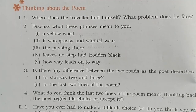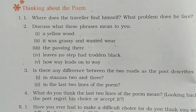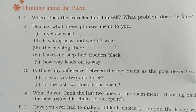The second part of question 1: Discuss what these phrases mean to you. First, 'a yellow wood' — a yellow wood means a wood in autumn; its leaves had turned yellow. Second, 'it was grassy and wanted wear' means the path was covered with grass; obviously, few people had walked on it, so the grass was not worn out. Third, 'the passing there' means walking on the road.